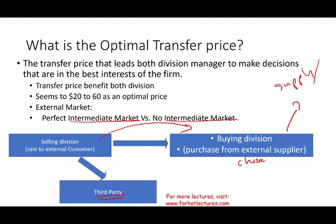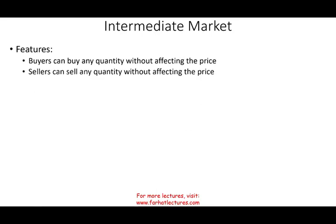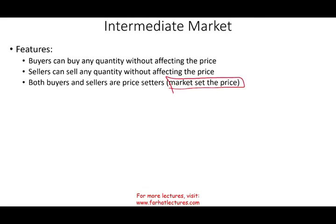What are the features of an intermediate market? Buyers can buy any quantity without affecting the price, and sellers can sell any quantity without affecting the price — there's plenty of supply and demand. Both buyers and sellers are price takers, meaning the market sets the price. So what is the optimal transfer price if we have an intermediate market? The answer is the market price. If there is an intermediate market for the product, the best price for both parties is that market price.